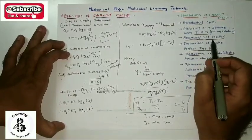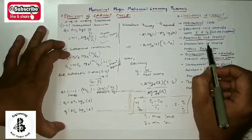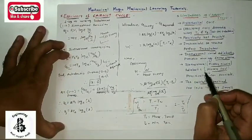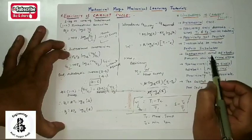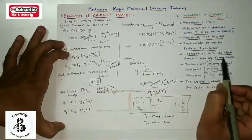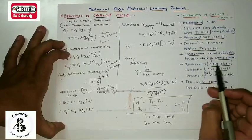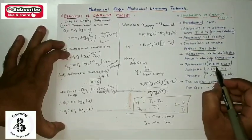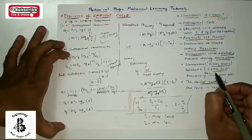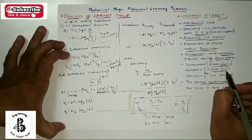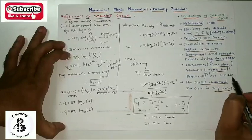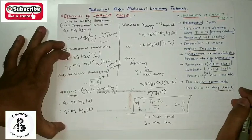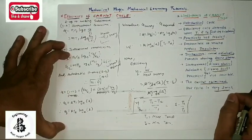Practically the Carnot cycle is not possible. It is impossible to make perfectly insulating materials surrounding the cylinder. Isothermal and adiabatic processes cannot occur during the same stroke — isothermal requires the piston to move slowly while adiabatic requires the piston to move rapidly, which are contradictory. Also, the output obtained per cycle is very small. These are the many limitations of the Carnot cycle.